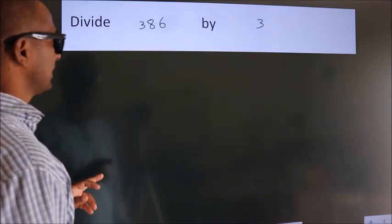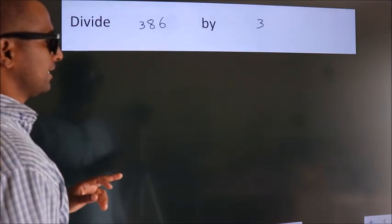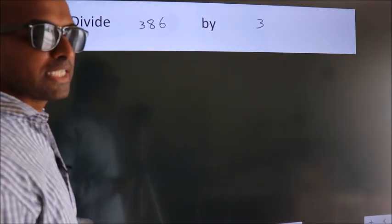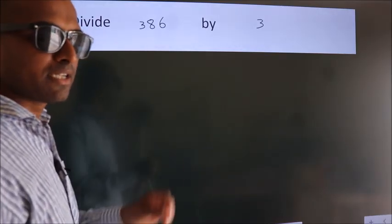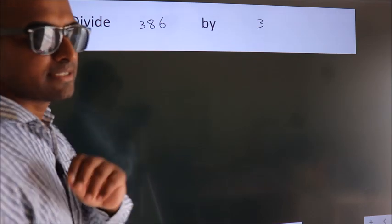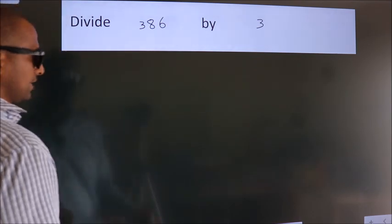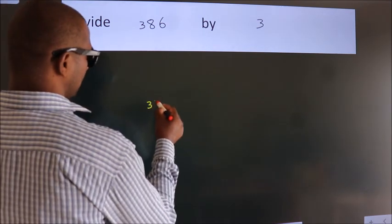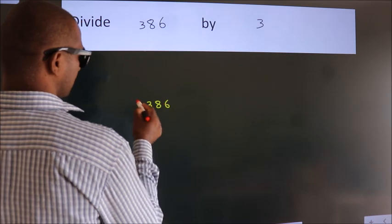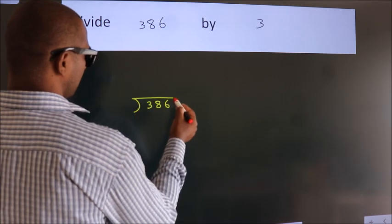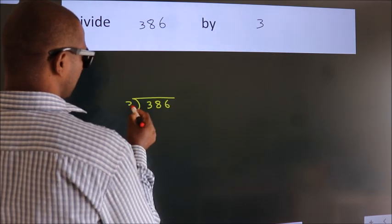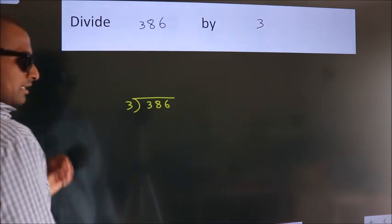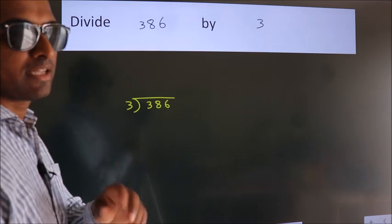Divide 386 by 3. To do this division, we should frame it in this way: 386 here, 3 here. This is your step 1.